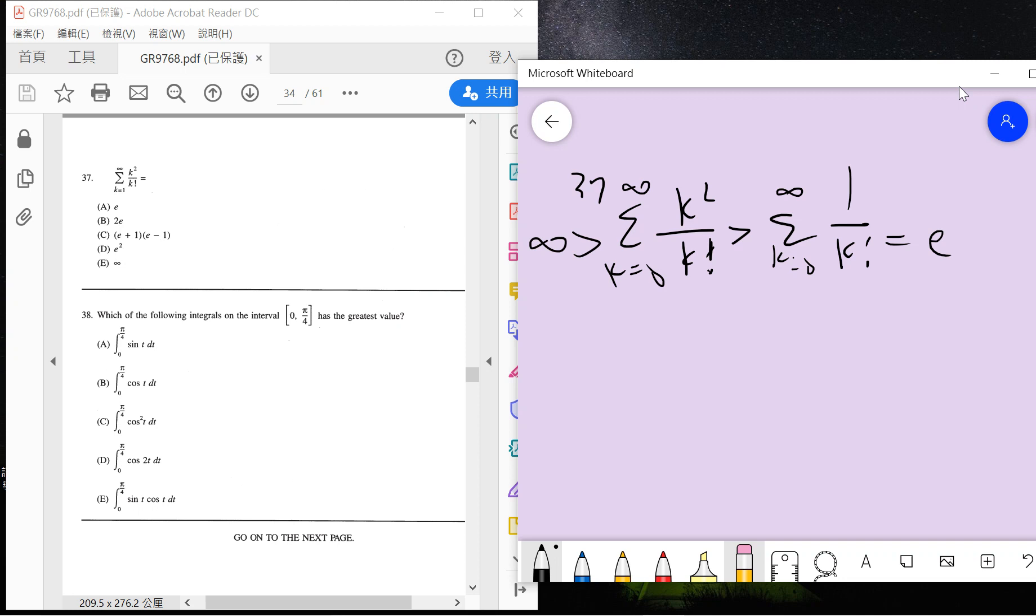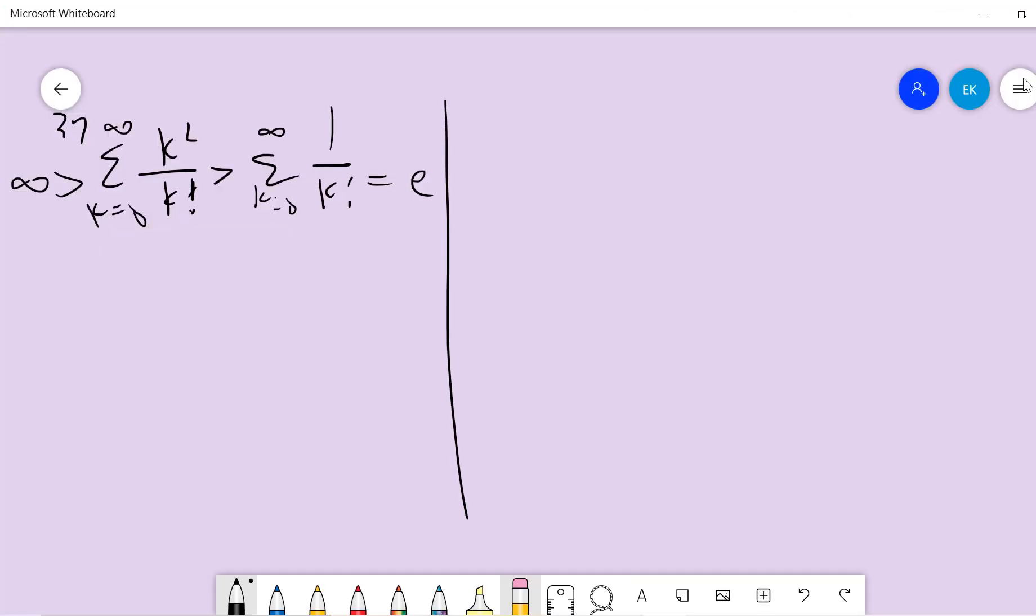To do this, we know that exponential z equals the sum of z^k over k factorial from k equals zero to infinity. So we differentiate with respect to z.